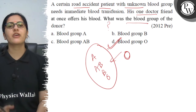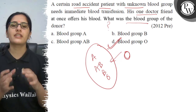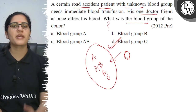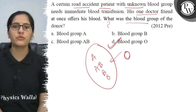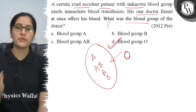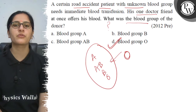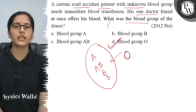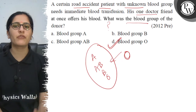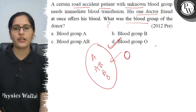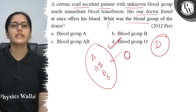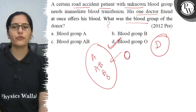Otherwise, what happens? There will be rejection. Our immune system will reject the other blood, and antibodies will form against the other blood group. That is very harmful to that particular person. So, here our correct answer is only Option D. Best of luck.